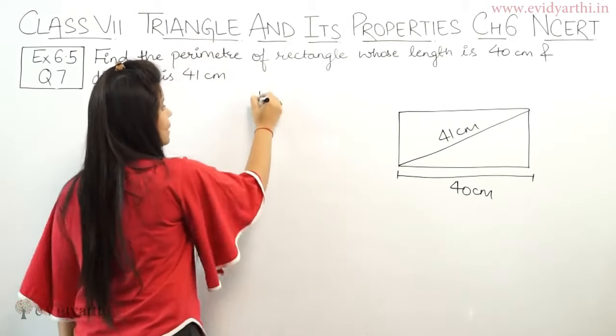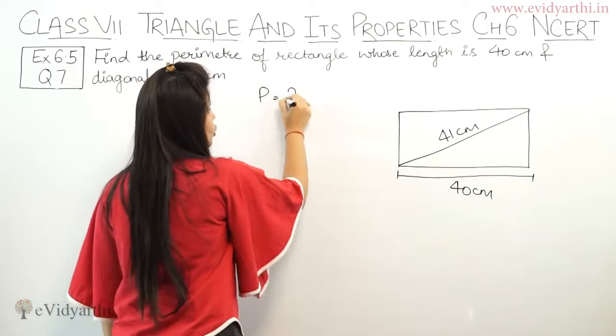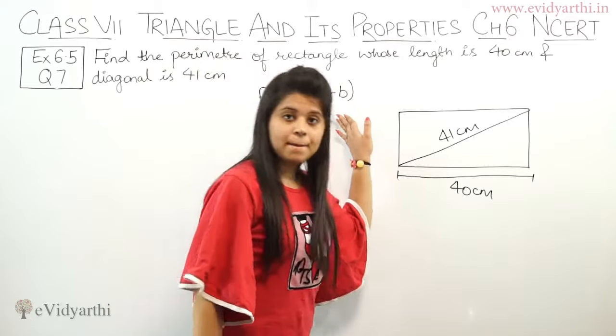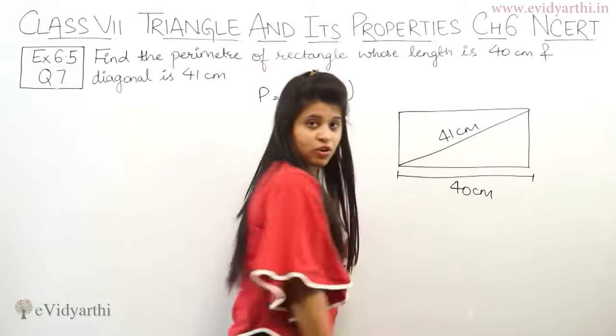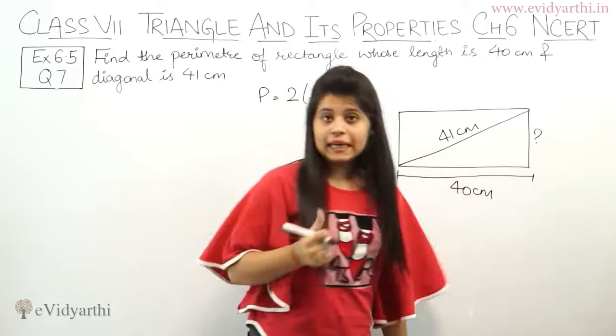But to find perimeter, what is the perimeter of rectangle? What is the formula? 2L plus B. That means 2 times length plus breadth. Now length is 40 cm, but breadth is not given. You need breadth.